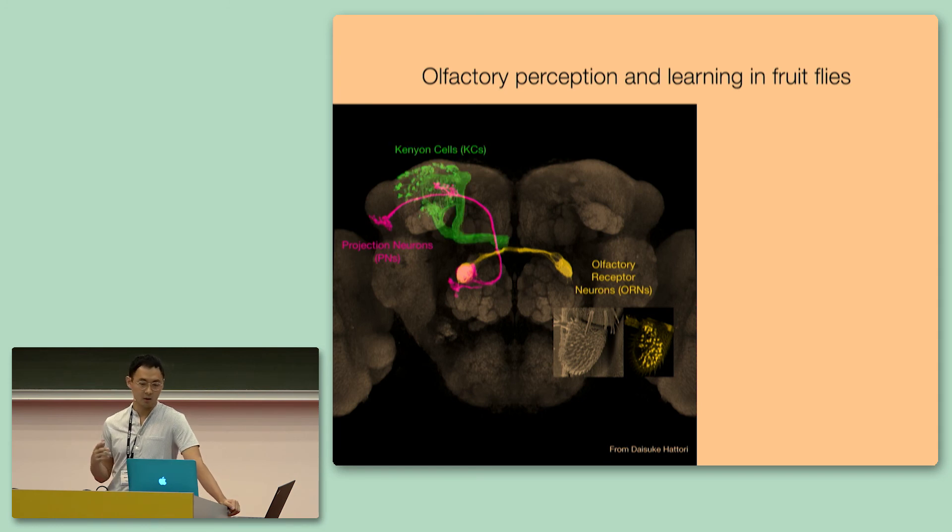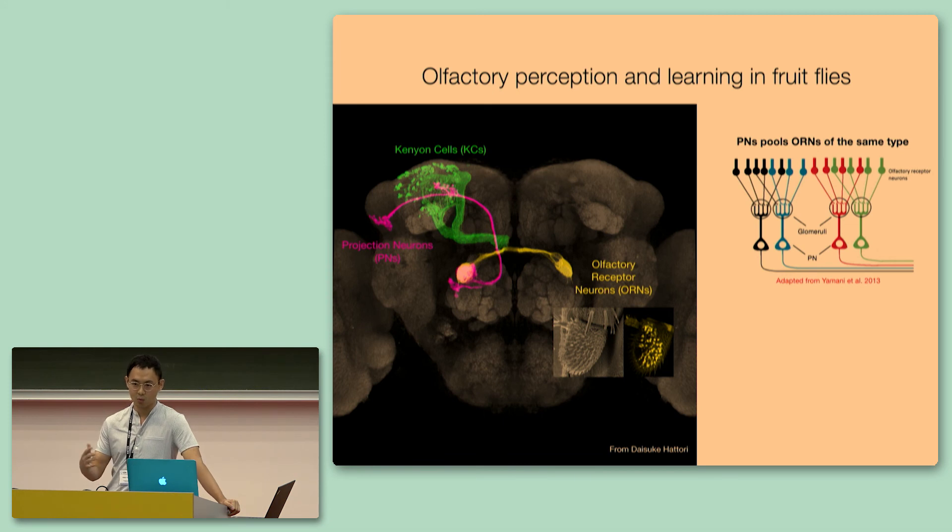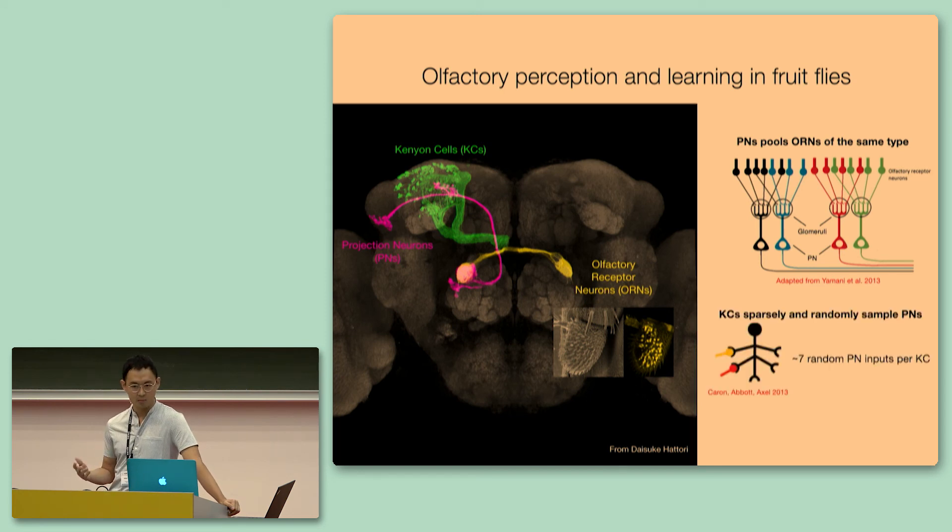They, in turn, innervate a large population of expansion layer neurons called Kenyan cells in a sparse and random fashion. So here are the two motifs that are present in the olfactory system. The first is that, again, there is a one-to-one mapping between olfactory receptors and projection neurons. And the second, perhaps more incredibly, is that there is anatomical evidence to definitively show that every single Kenyan cell out of all the 2500 Kenyan cells samples sparsely and also randomly from projection neurons. In fact, there is a precise number seven.